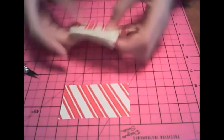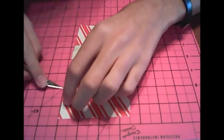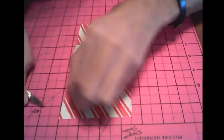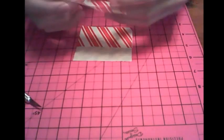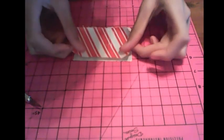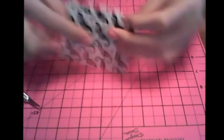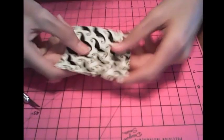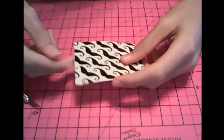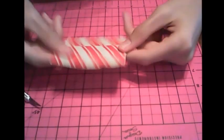Flip it over again, take your fourth and final strip, stick it down, and now you have a sheet of tape that is four inches long and three inches high, with no sticky side showing.